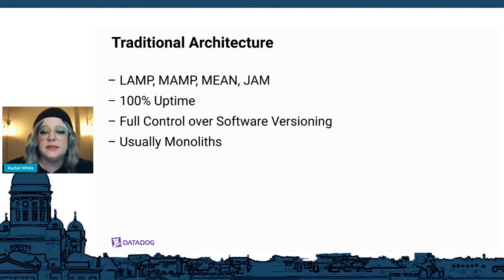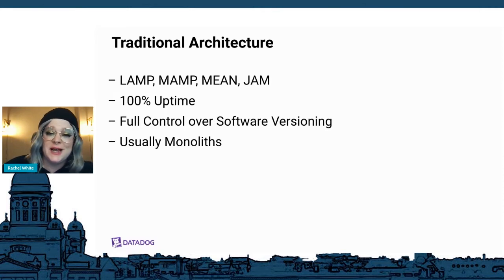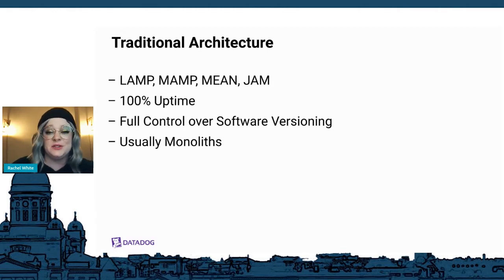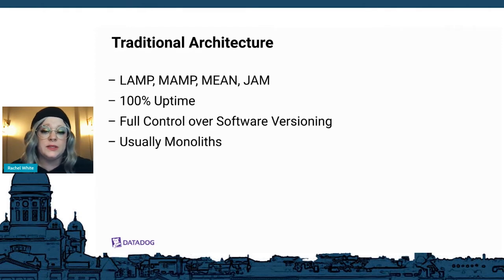Mac OS, Apache, MySQL, and PHP is a MAMP stack. Mongo DB, ExpressJS, Angular, and Node is MEAN. And JavaScript APIs and Markup is Jamstack, which is a fairly new name for a more simple approach to web applications.